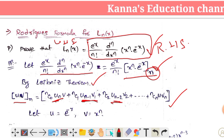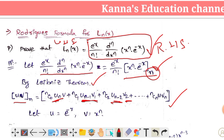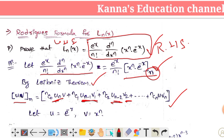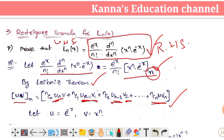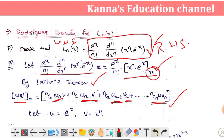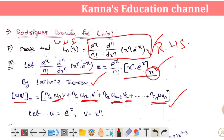V is differentiated 2 times. That means u is n-1 and v is n-1. Last term: nc0, u is constant. We call that the u value, and v is differentiated n times.